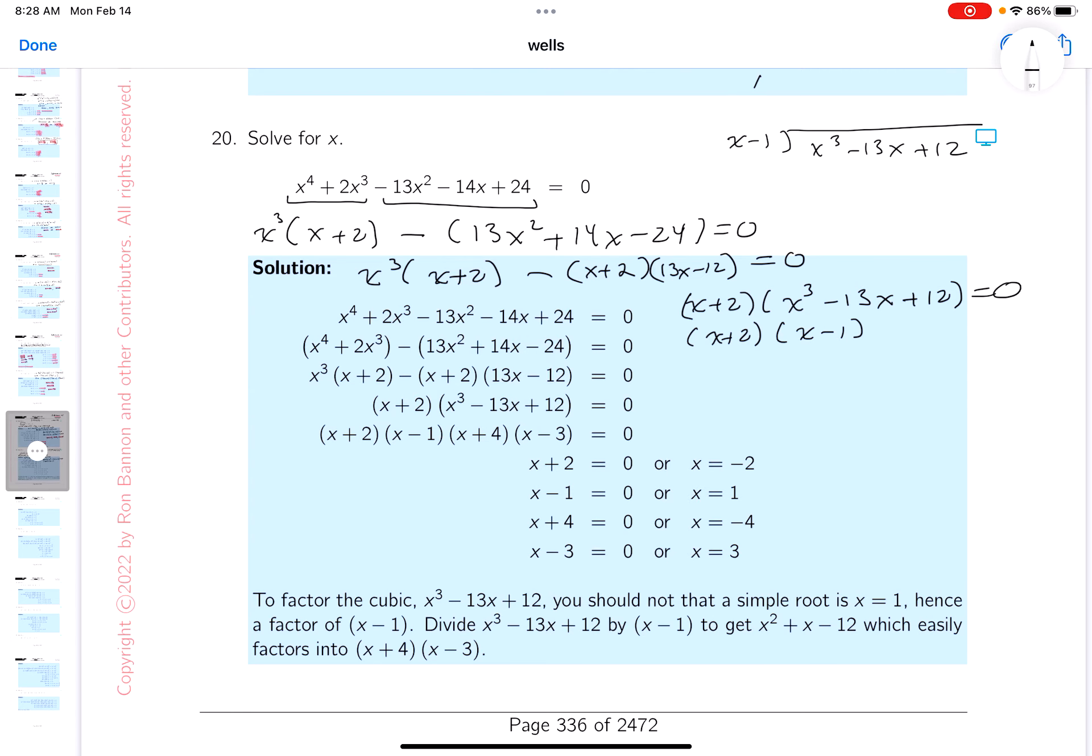What do you get over here? x squared. That gives you x cubed. Minus x squared. Subtract. Do it again.